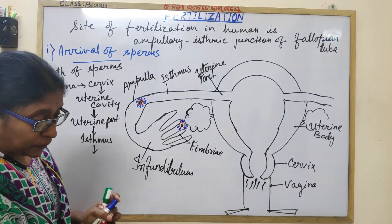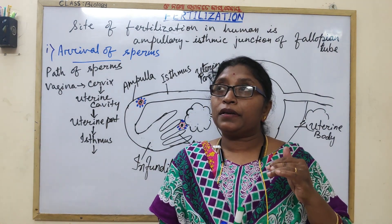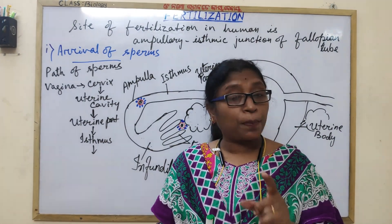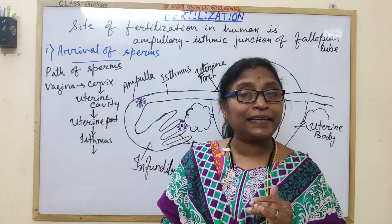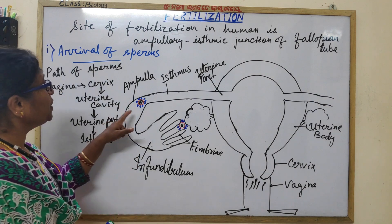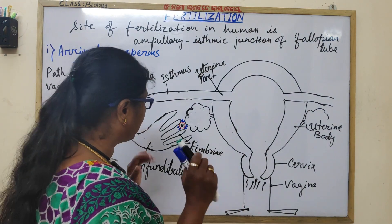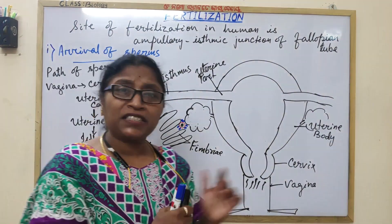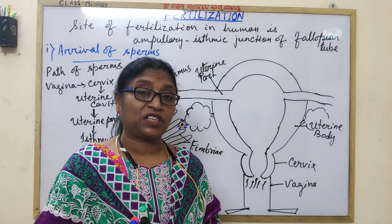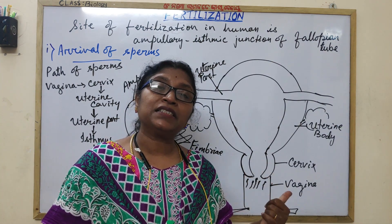During ovulation — two days before or one day after ovulation — sperms can survive for 48 hours after ejaculation. So when they reach the fertilization site, if the ovum is there or ovulation of the secondary oocyte is anticipated, only then can fertilization take place. Not all copulations lead to fertilization because the sperms and the secondary oocyte have to be transported to the fertilization site simultaneously.